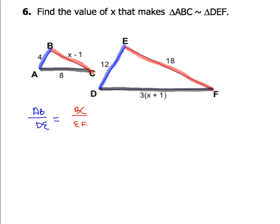We'll do it once to find the variable for side BC. Don't be lazy and just start putting numbers in — write the letter names for the sides first. AB/DE is straightforward: 4 over 12. BC is X − 1, and EF has a length of 18. So the proportion is 4/12 = (X − 1)/18.